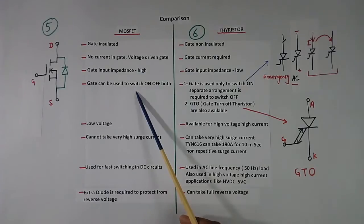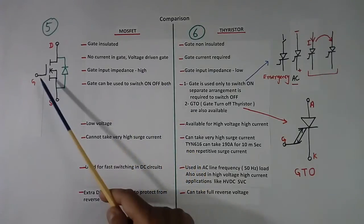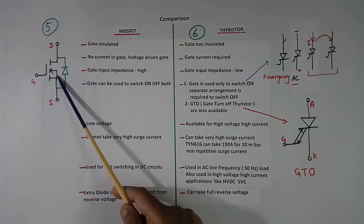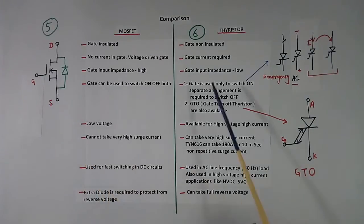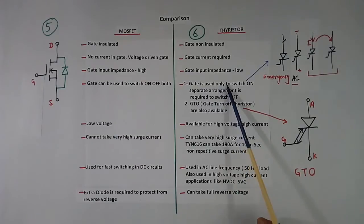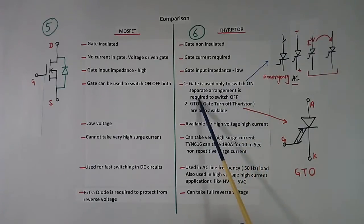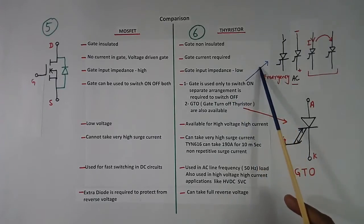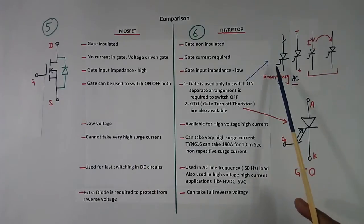In MOSFET case, gate can be used to switch ON and OFF both. If you want to switch ON, give the gate pulse. If you want to switch OFF, remove the gate pulse or make it zero. In thyristor case, gate is used only to switch ON. Separate arrangement is required to switch OFF — by using gate you cannot switch OFF. Here if you remove gate pulse, it will come OFF. Here it will not.